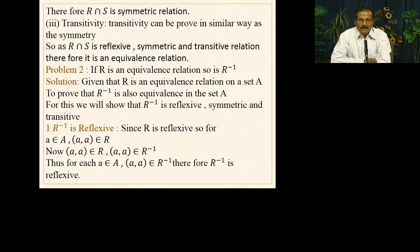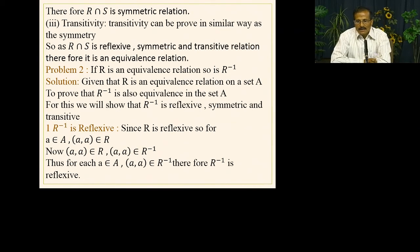For symmetry: since R and S are equivalence relations, they are symmetric. If (a,b) ∈ R∩S, then (a,b) ∈ R and (a,b) ∈ S. By symmetry of R: (b,a) ∈ R, and by symmetry of S: (b,a) ∈ S. Since (b,a) is common to both, (b,a) ∈ R∩S. So R∩S is symmetric. Similarly, transitivity can be shown: R∩S is also transitive.